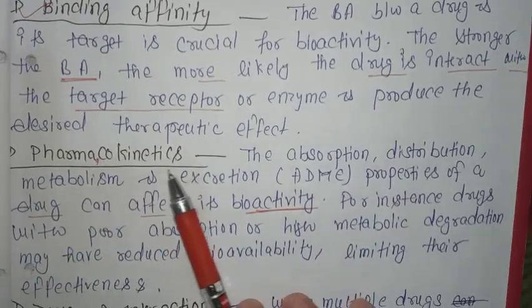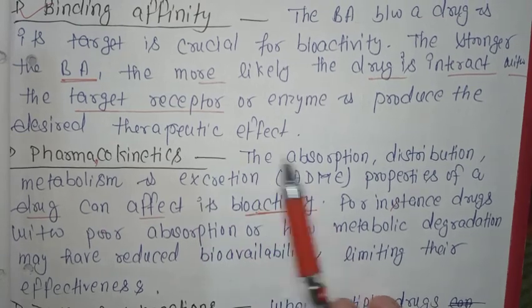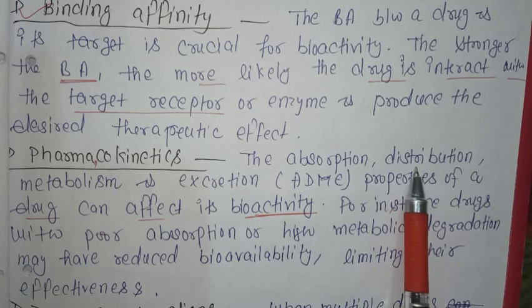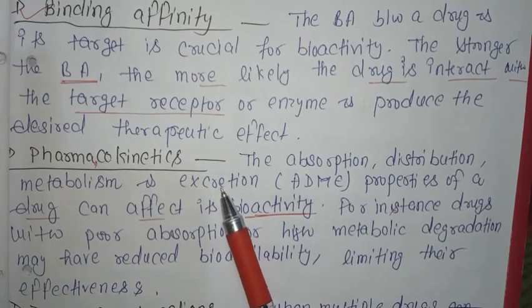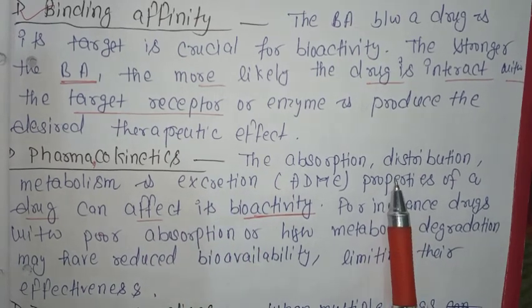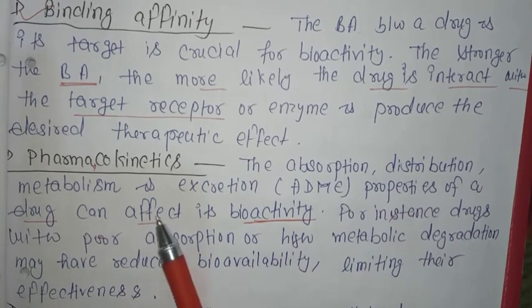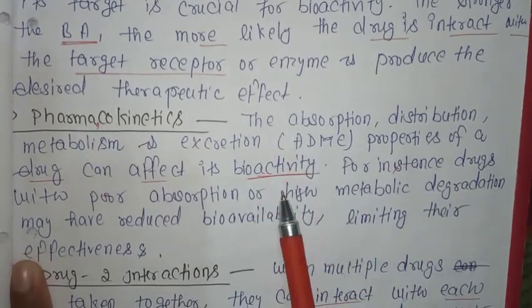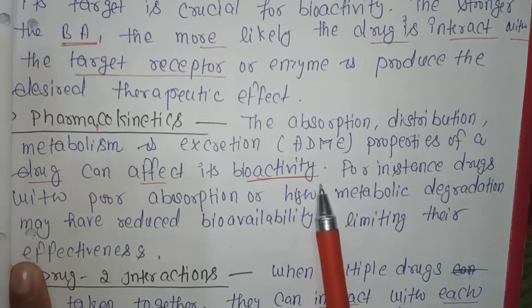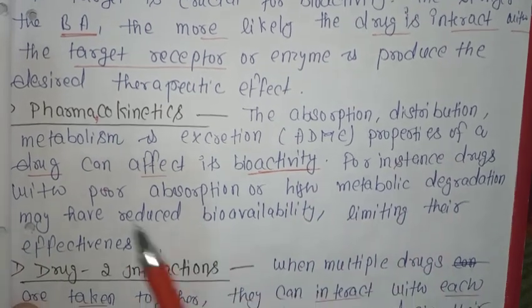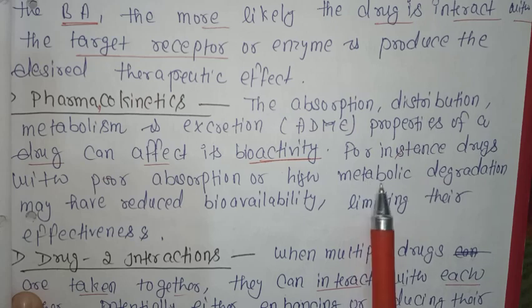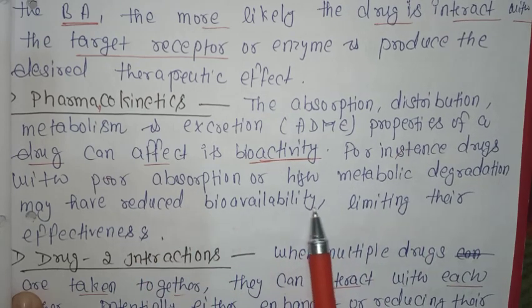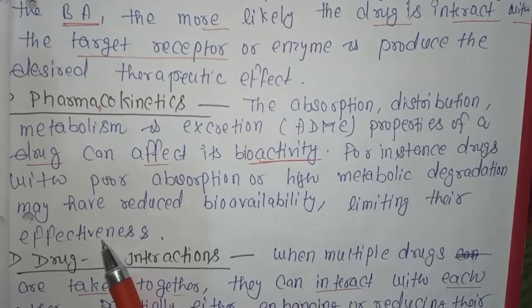The third factor is pharmacokinetics. There are mainly four ADME properties: absorption, distribution, metabolism, and excretion. These ADME properties of a drug can affect its bio-activity. For instance, drugs with poor absorption and high metabolic degradation may have reduced bioavailability, limiting their effectiveness.